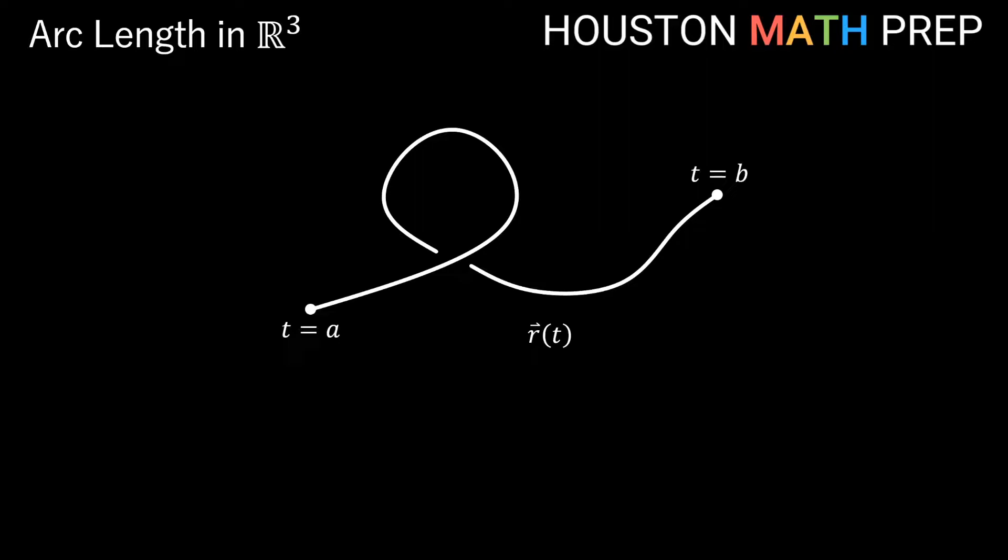So here we're going to use our good friend integration to help us do this. To see how this works, imagine that we tried to approximate this total length along the curve from t equals a to t equals b, and let's say we did that by taking several vectors, placing them end-to-end, and then adding up the total length of these vectors to get an estimate. As you see here, it'd be a pretty rough estimate since there are places where we aren't doing the best job of approximating what's really going on along the curve.